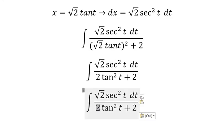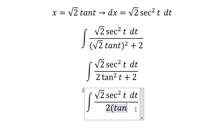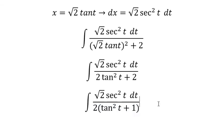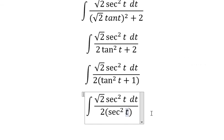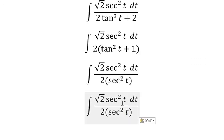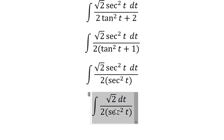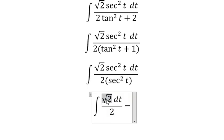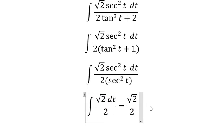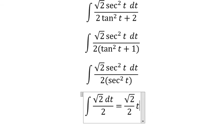We do factorization with number two. This one we change for secant of t squared. Then we simplify. We get the square root of two over two times t plus C.